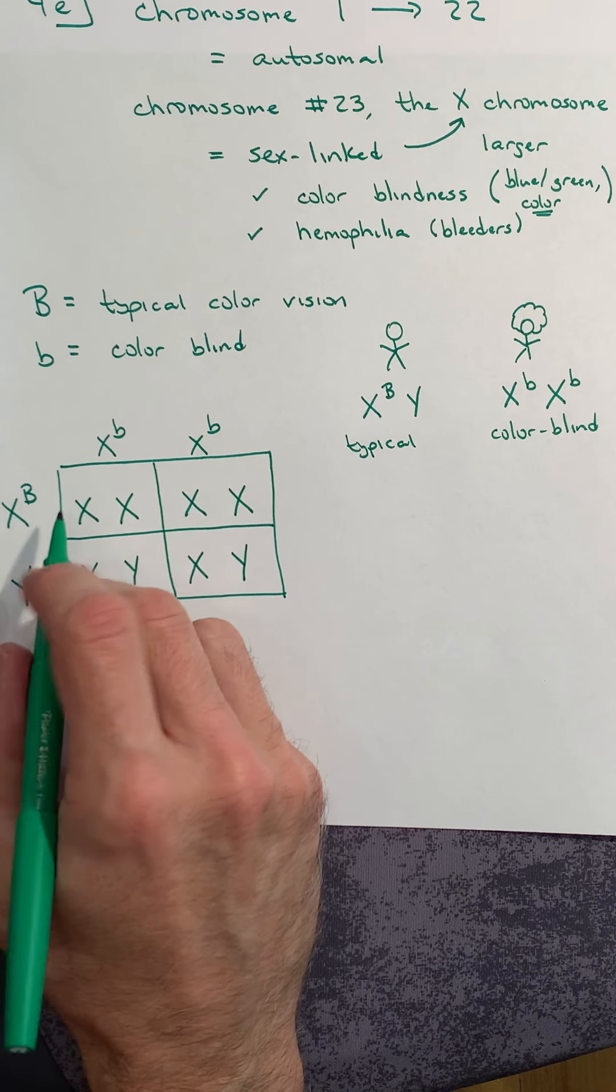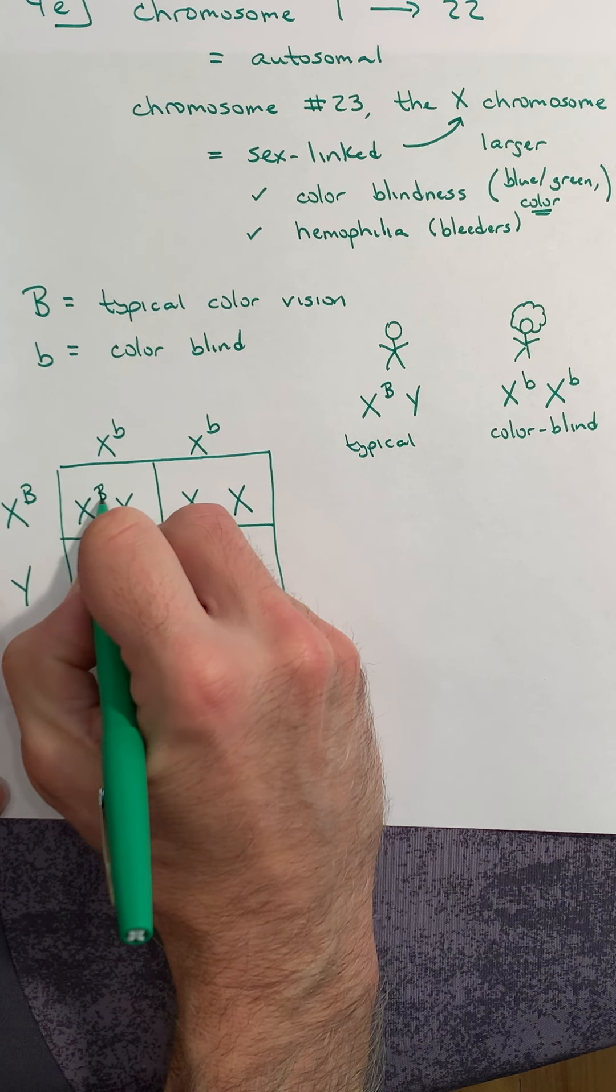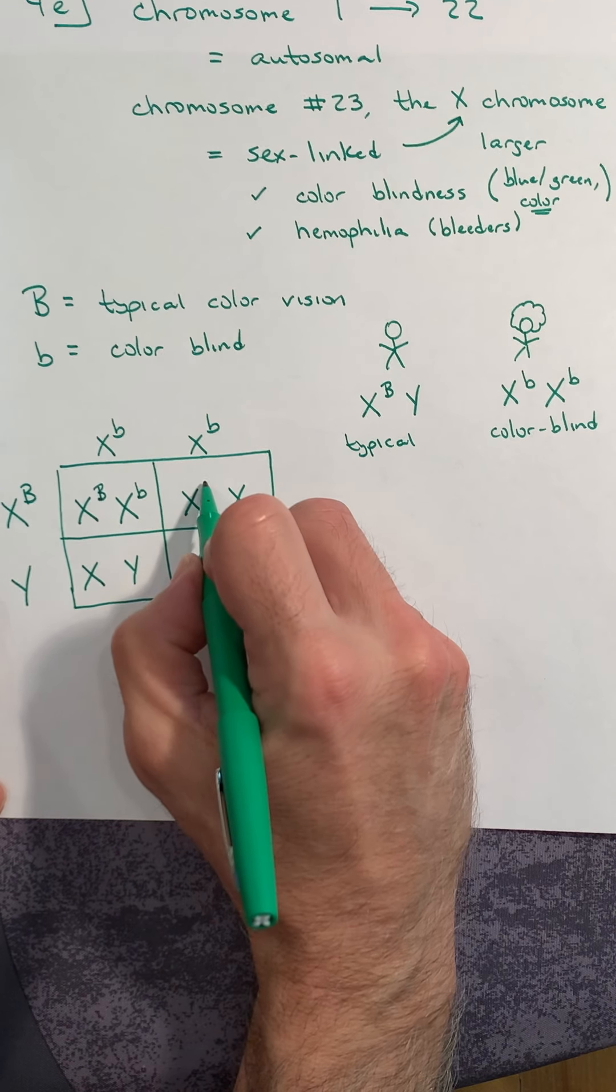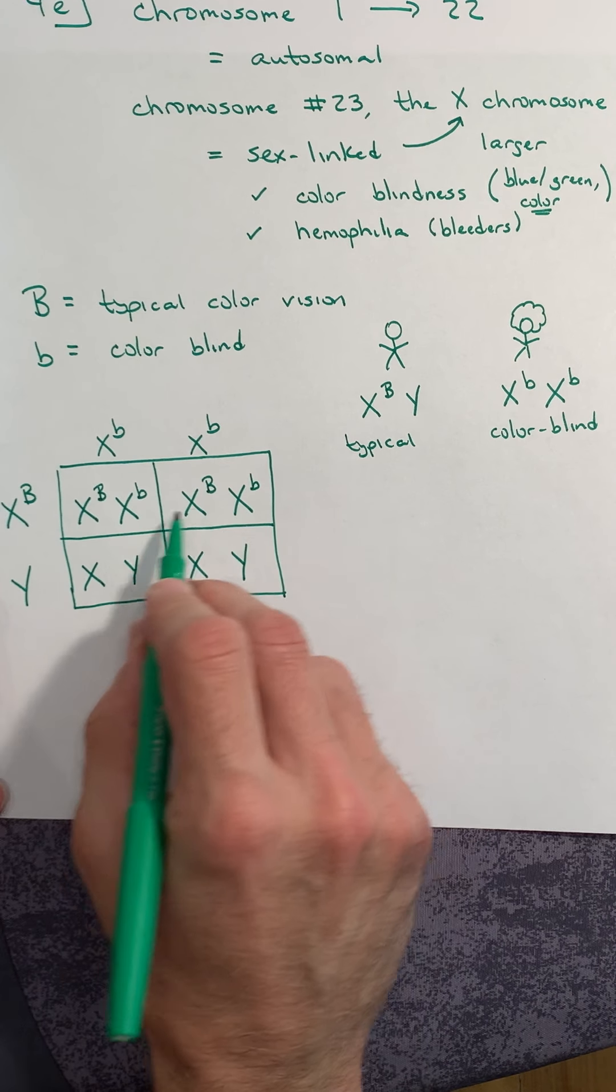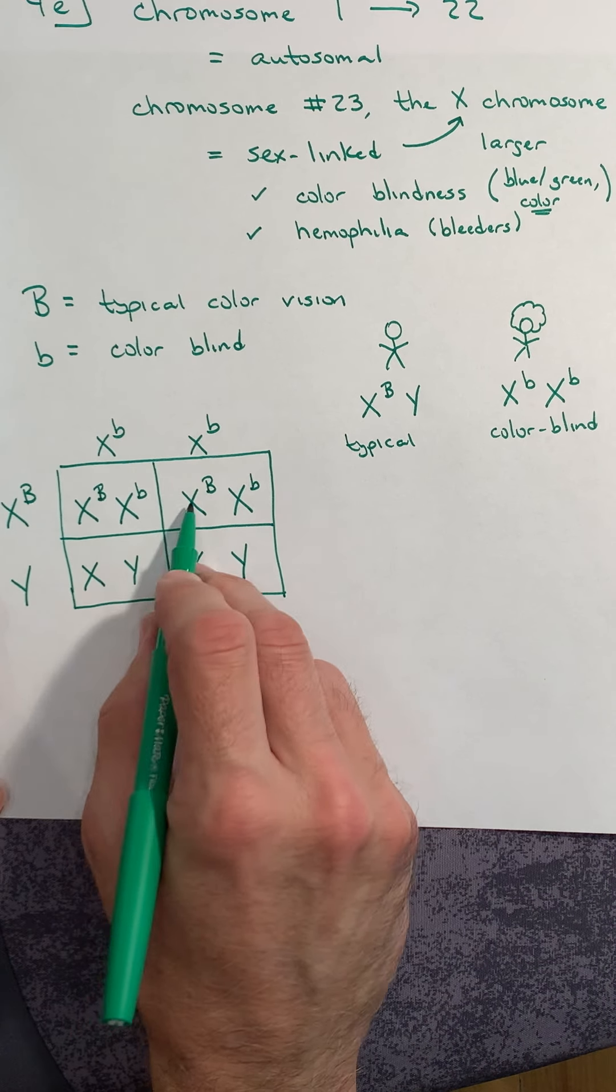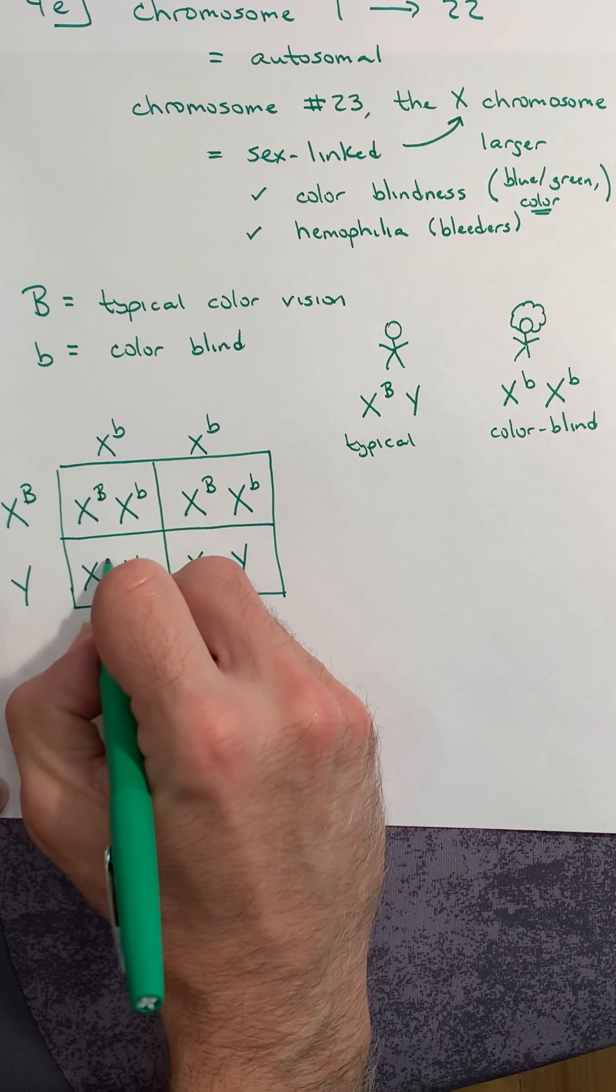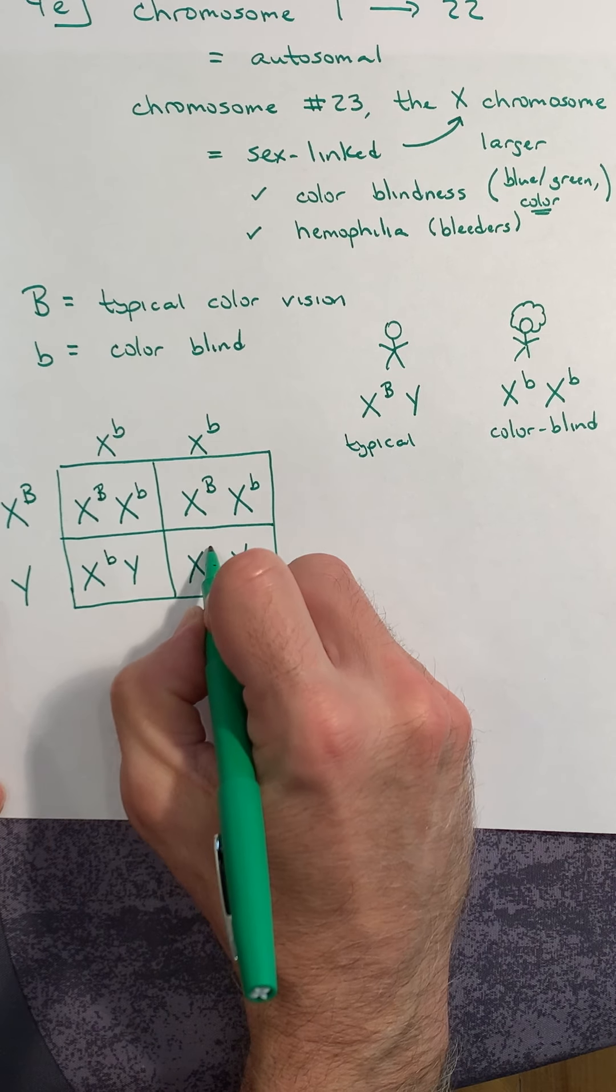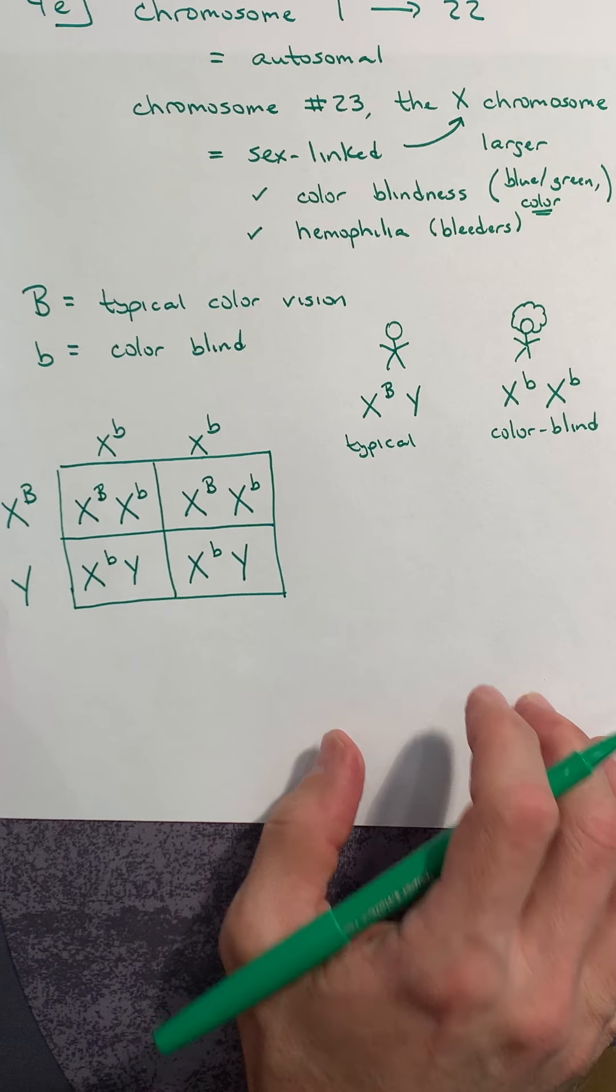In this top-left box, here's mom's contribution, dad's contribution: X big B, X little b. Same thing over here: X big B, X little b. The daughters here are both going to be heterozygous. Then you go to the bottom: X little b from mom, Y, so you have colorblind male. X little b, Y—another colorblind male.